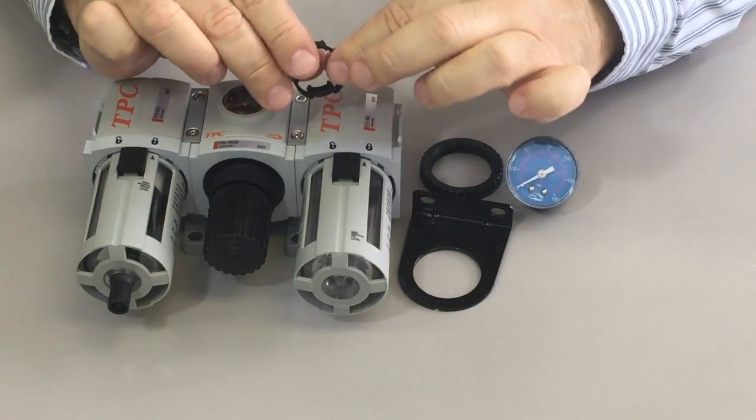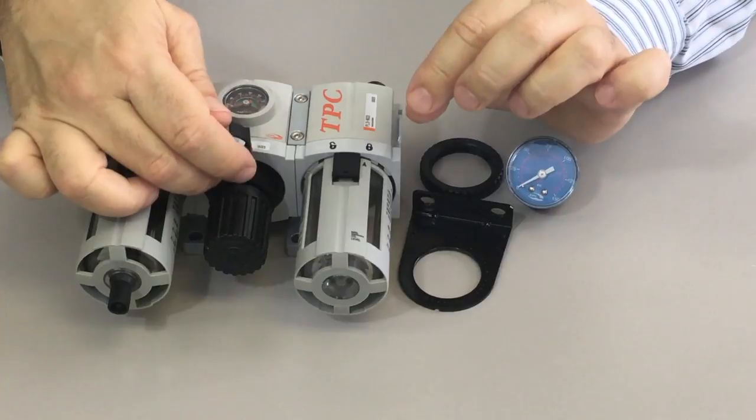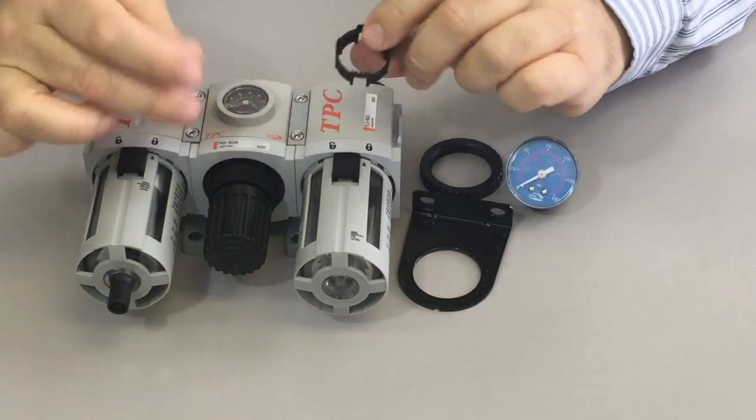And you can even get a tamper-proof piece installed on the knob to keep someone from walking by and changing your airflow.